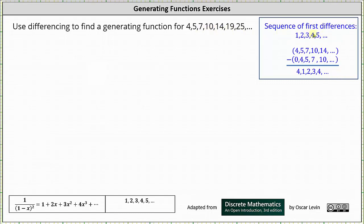And we know the generating function for 1, 2, 3, 4, 5, and so on is 1 divided by the square of 1 minus x, which is why the technique of differencing is a good choice to find the generating function.